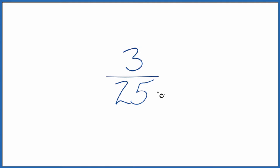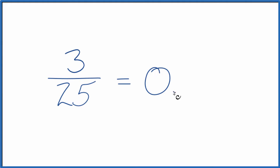First, we could just divide 3 by 25 on our calculator, and we end up with 0.12. So the fraction 3/25 equals the decimal 0.12.